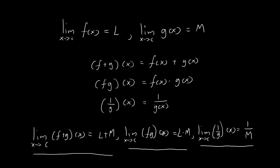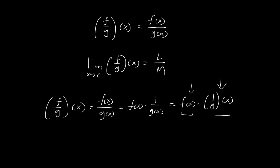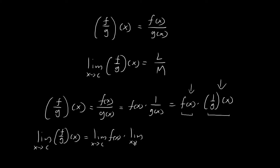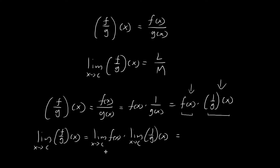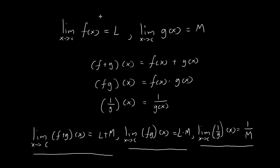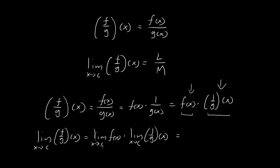That means we can use the product rule. The limit as x tends towards c of f over g of x is equal to the limit as x tends towards c of f of x, times the limit as x tends towards c of 1 over g of x. We found out in the previous video that the second limit equals 1 over m, and by definition the first limit equals l. So this entire expression is just equal to l times 1 over m, which is l over m. And so we have established the quotient law.